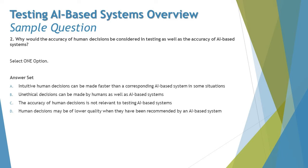Accuracy is about how close you are to the desired expectation, not about speed. AI is faster than the human mind, but the parameter we are concentrating on is accuracy, not time. So option A is not relevant. Option B says unethical decisions can be made by humans as well as AI-based systems — that's also not related to comparing accuracy between humans and machines for testing purposes.